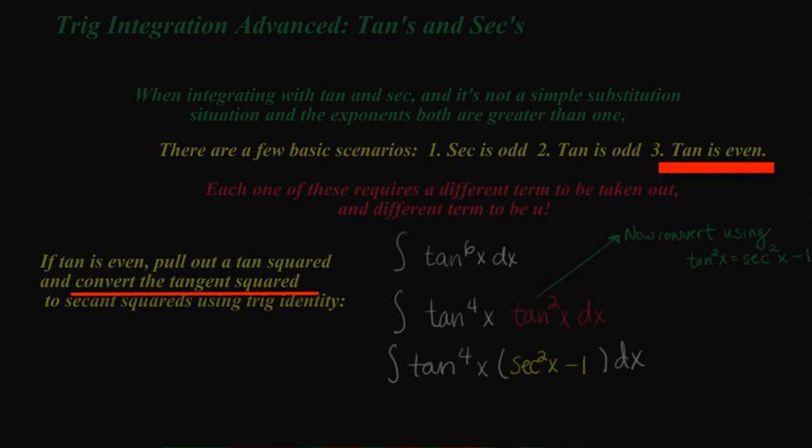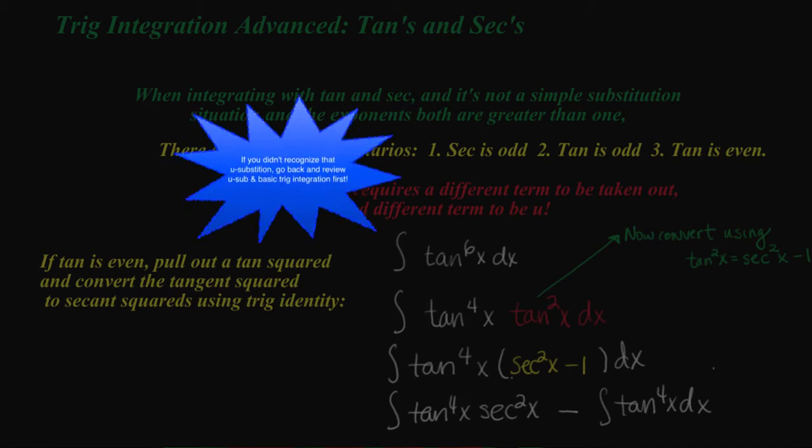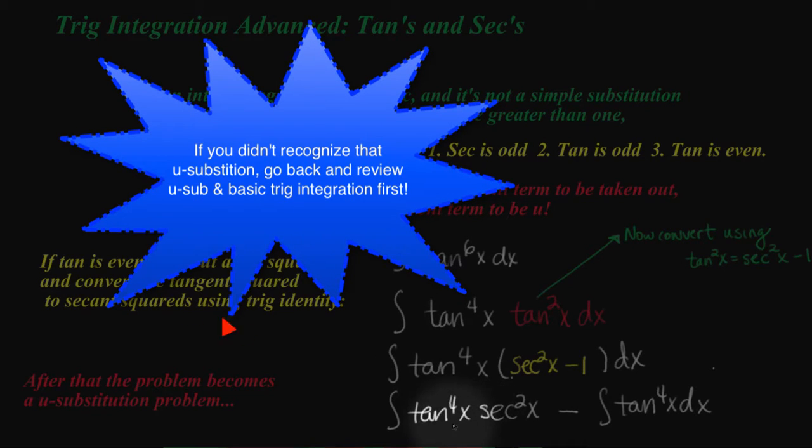Now at this point, you can distribute through and create two separate integrals. First one, hopefully you can see that as a U substitution. Hopefully you can see that where U equals tangent and DU is secant squared.